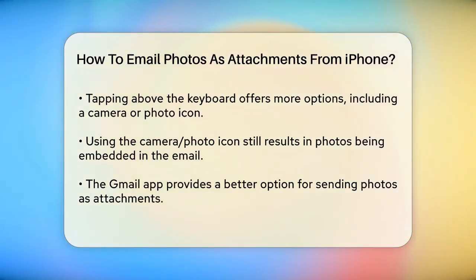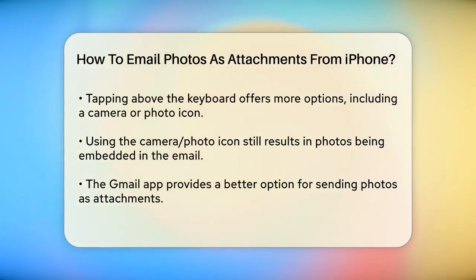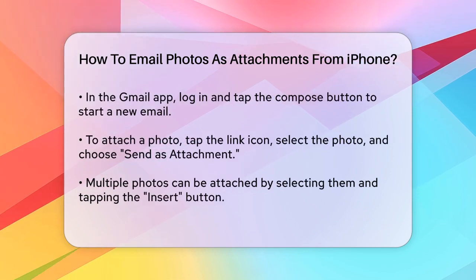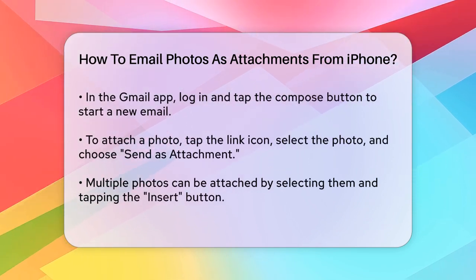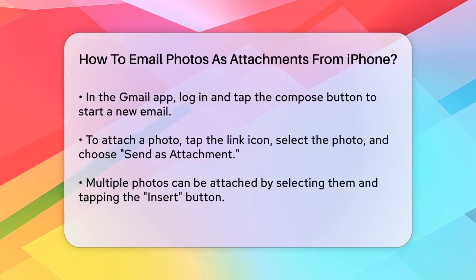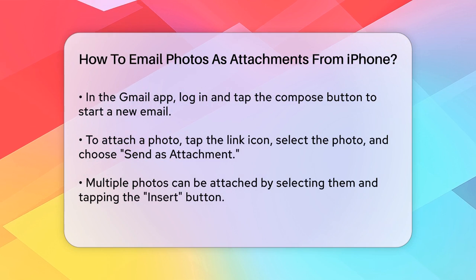For sending photos as attachments, using the Gmail app can be a better option. Open the Gmail app, log in with your email account, and tap the Compose button. When you want to add a photo, tap the link icon in the top right corner, select the photo you want to attach, and then tap on the photo once. Here, you'll find an option to send as attachment. Select this, and the photo will be attached to the bottom of your email, not embedded in the body.